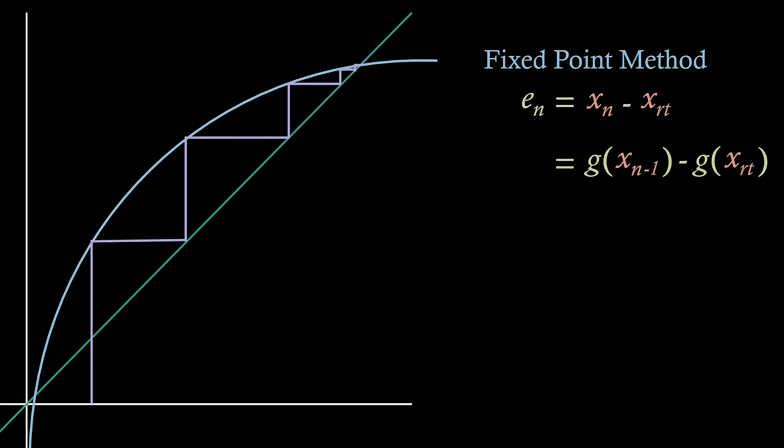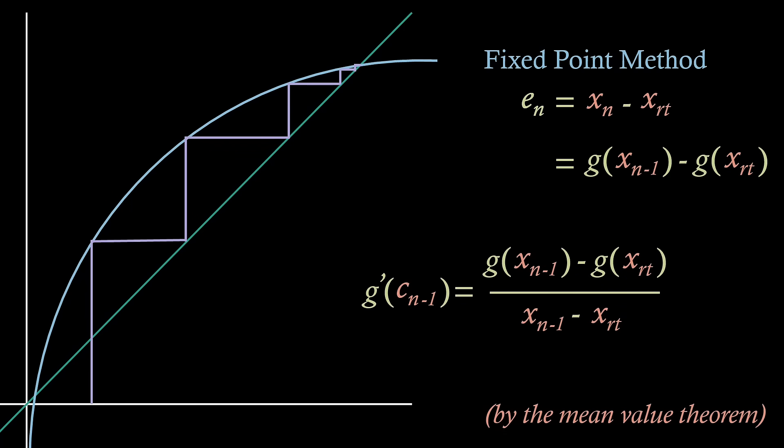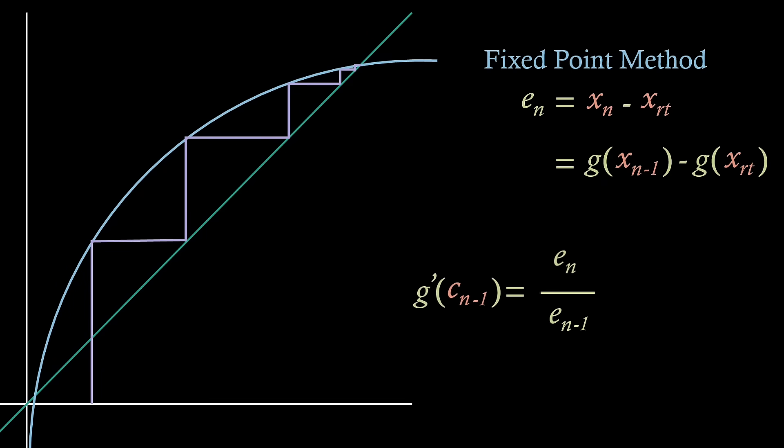We now use the mean value theorem, which is not proved within this video, but if you want to understand why this result occurs, I urge you to do some of your own research. Using the mean value theorem, we find that there exists a number c such that the differential of g evaluated at c equals g of xn minus 1 minus g of the root over xn minus 1 minus the root, with both top and bottom of this fraction being different versions of our error term. Replacing this with their respective iteration number, we see that g dash cn minus 1 equals en over en minus 1. Rearranging and taking absolute values, we see that we get an expression of error, where we clearly see that for each new iteration, the error is influenced by this absolute value of g dash at cn minus 1.